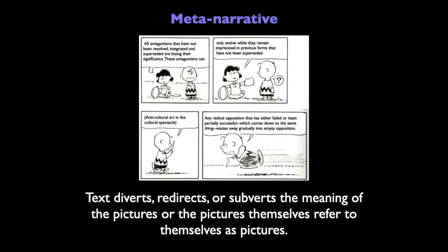Meta-narratives are a strategy whereby the text subverts the picture. The redirection or subversion of meaning: we have an expectation from looking at the pictures that we are seeing one kind of story, but as we enter into reading the text, we are suddenly confused by seeing something completely different. This tension between our desire for continuity between text and image and the disparity of that continuity means that the meta-narrative makes us aware of our ability to try and make sense of this — calling attention to our expectations of narrative continuity.